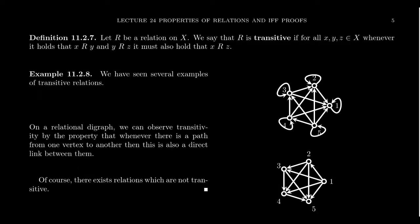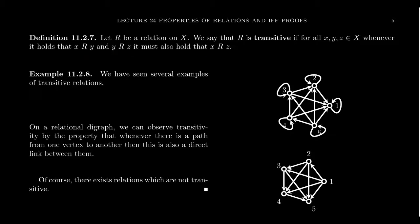We call a relation R transitive if, for all elements X, Y, and Z inside the set, whenever X is related to Y and Y is related to Z, it holds that X is related to Z. We don't introduce an opposite notion of transitivity here. Examples of transitive relations: equality, less than, greater than, less than or equal to, greater than or equal to, set containment, and divisibility.